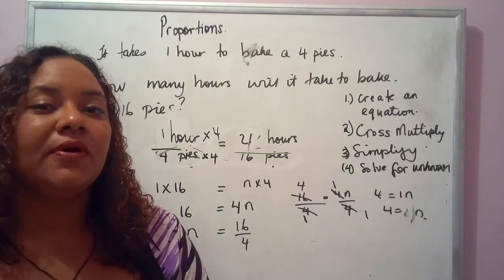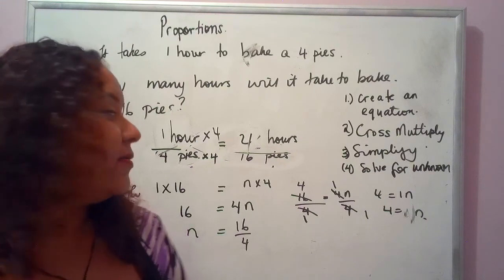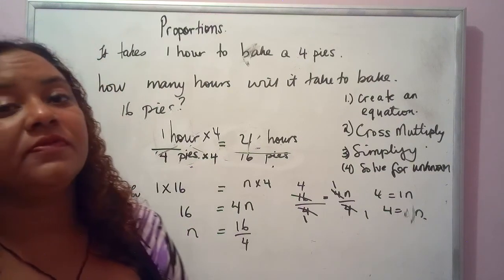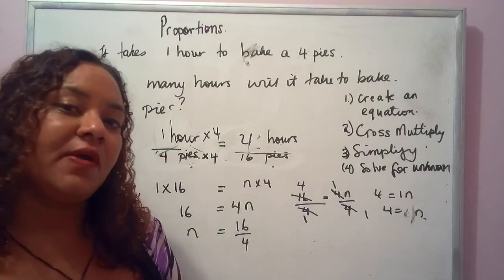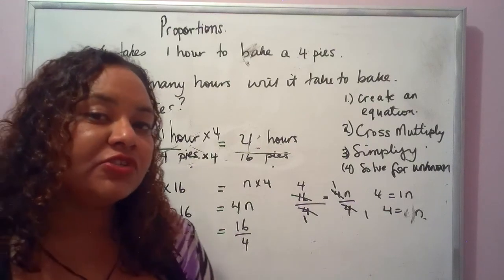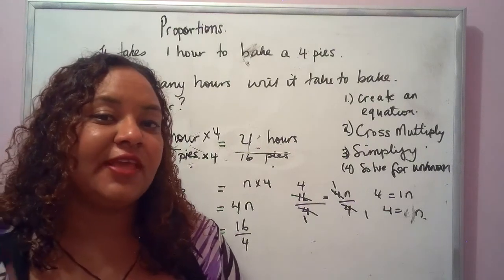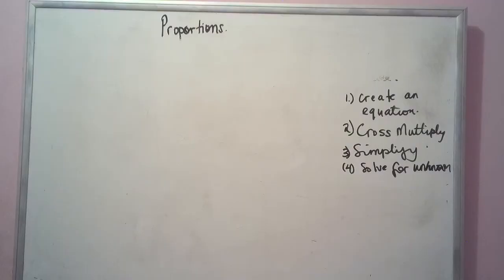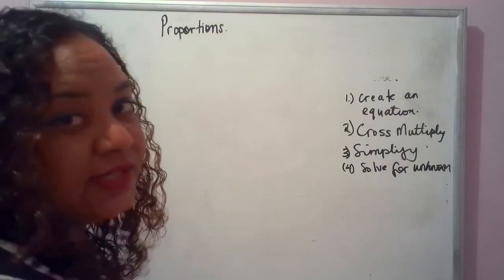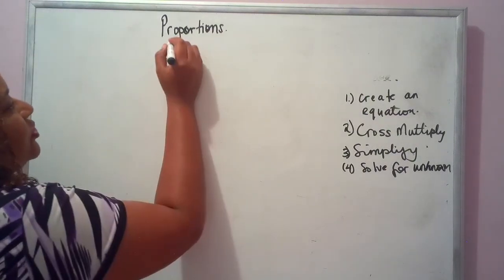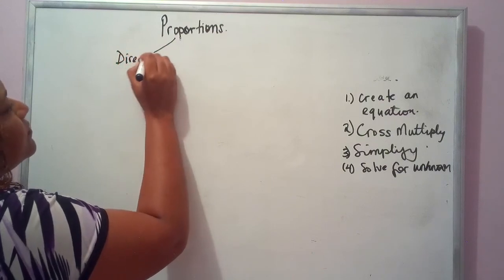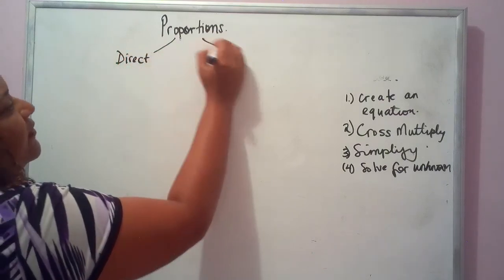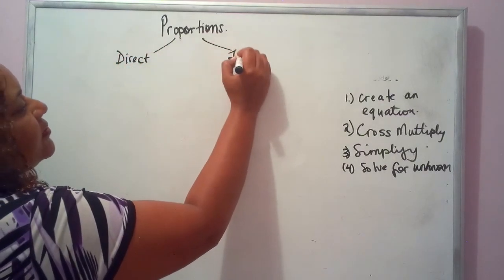It is important that you put the fractions in the same order on each side — hours over pies, hours over pies — because if it's switched on either side, it would not be a valid proportion and you won't be able to solve the sum. This is just an example of direct proportion. Now I'm going to give you an illustration of indirect proportion.